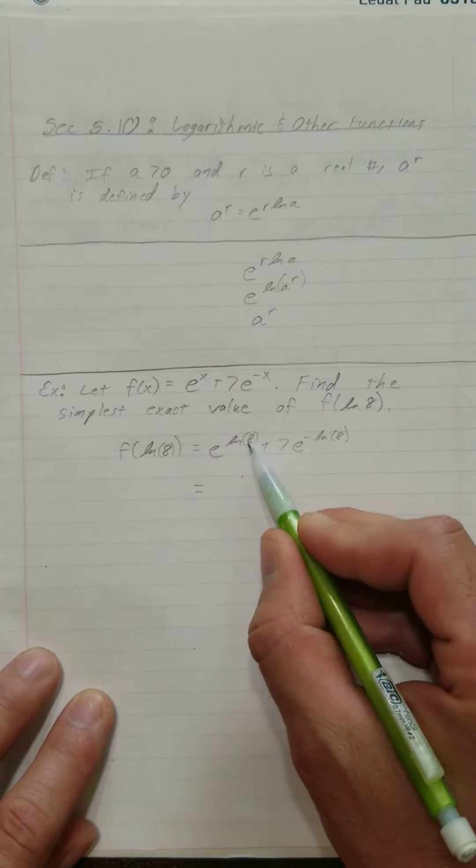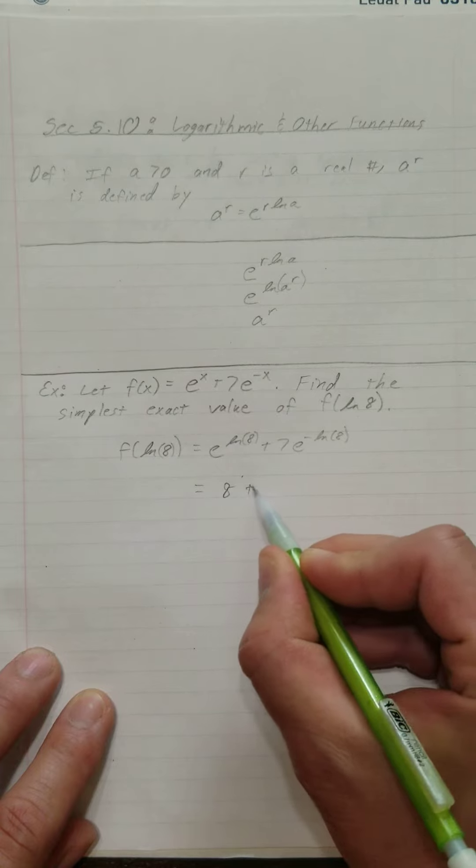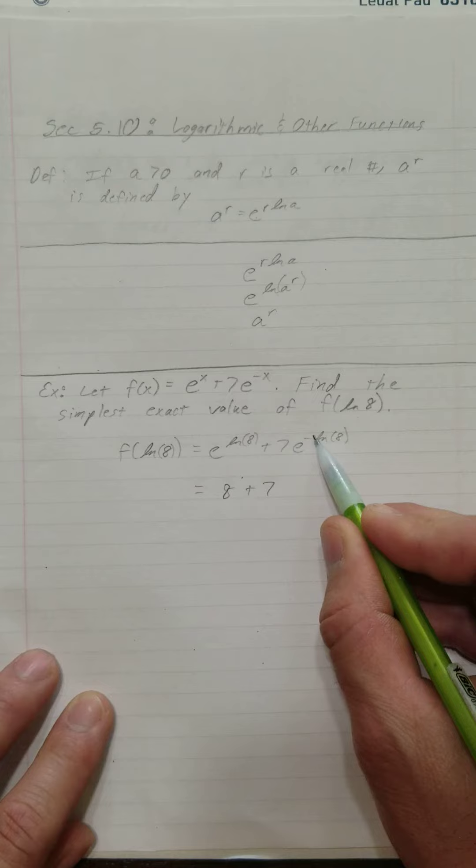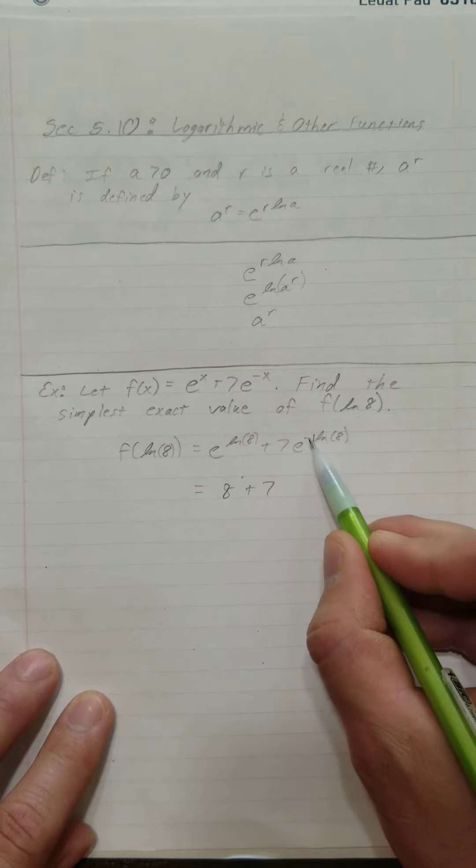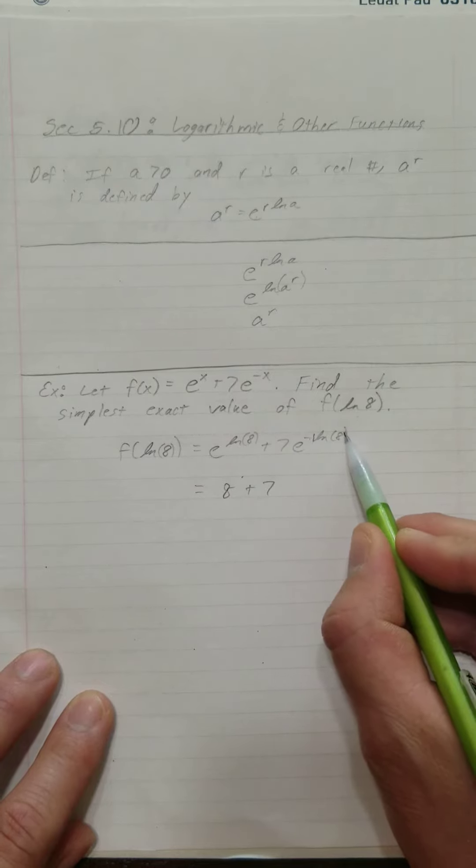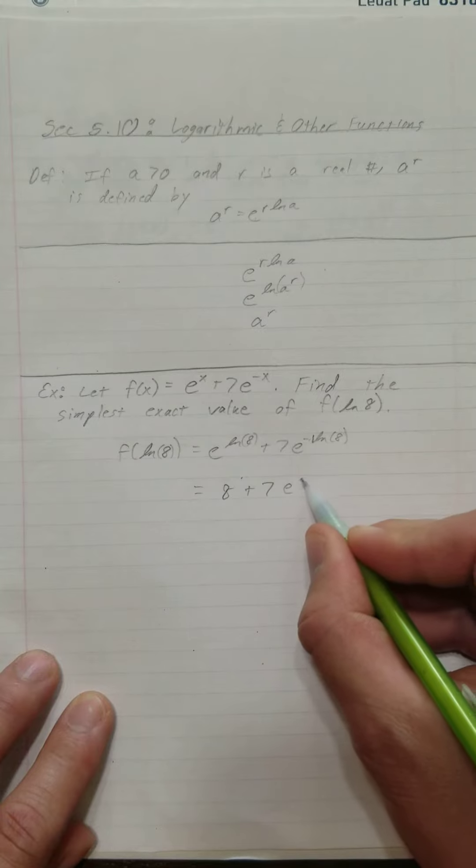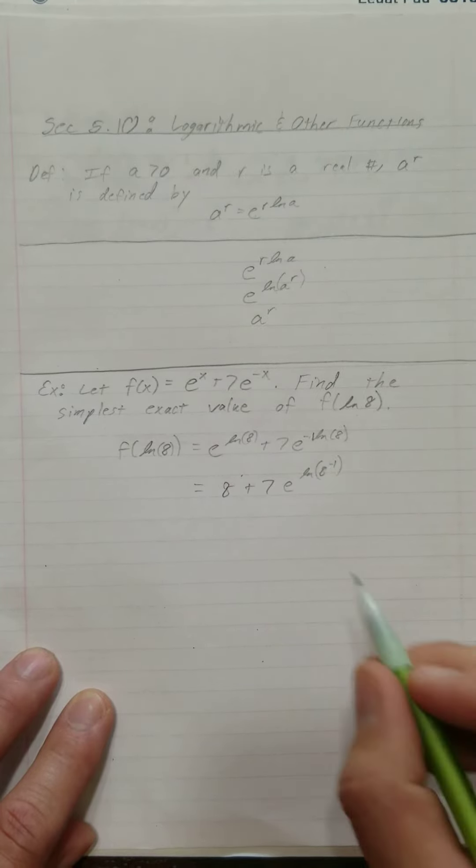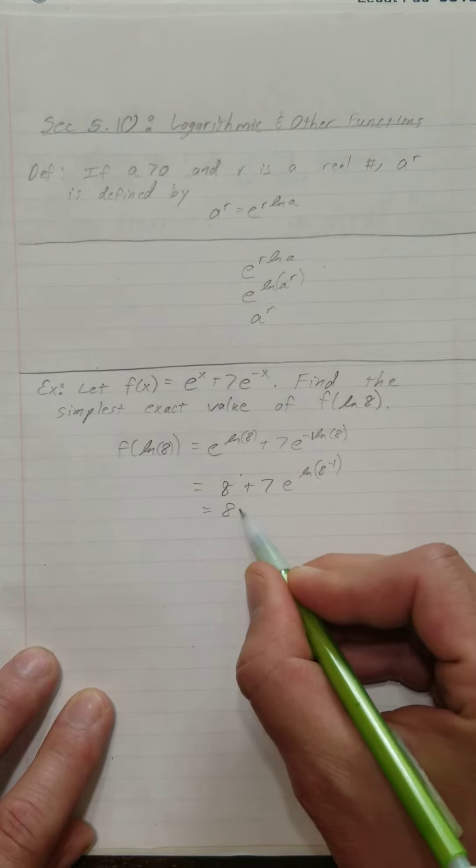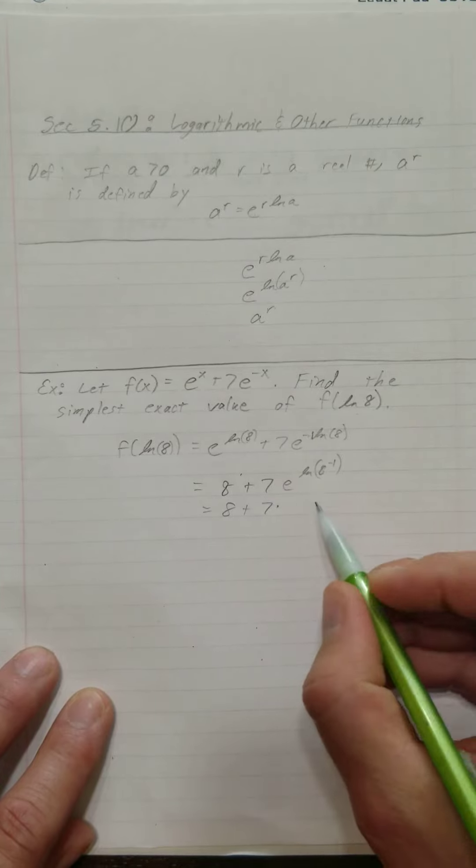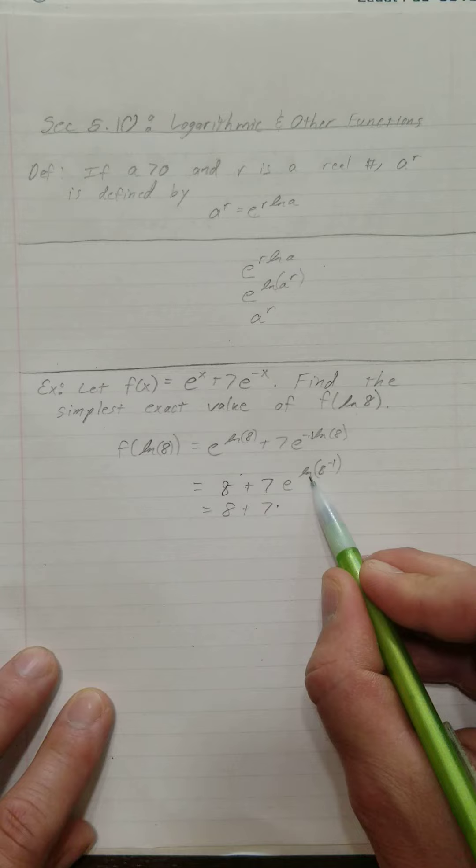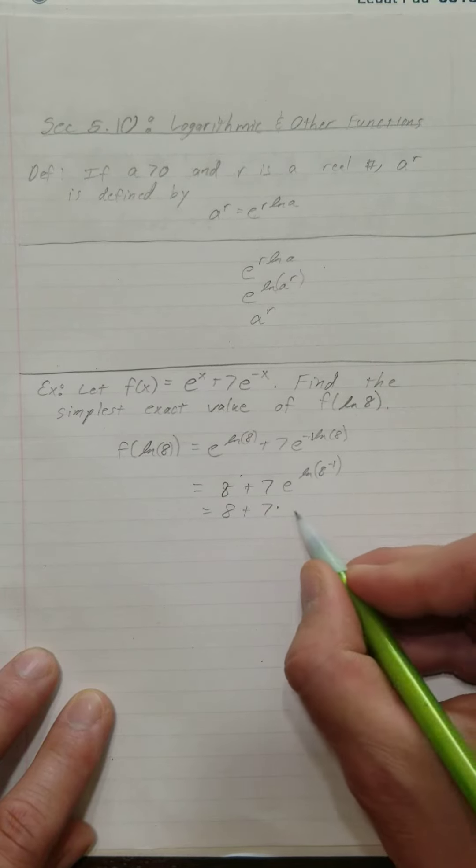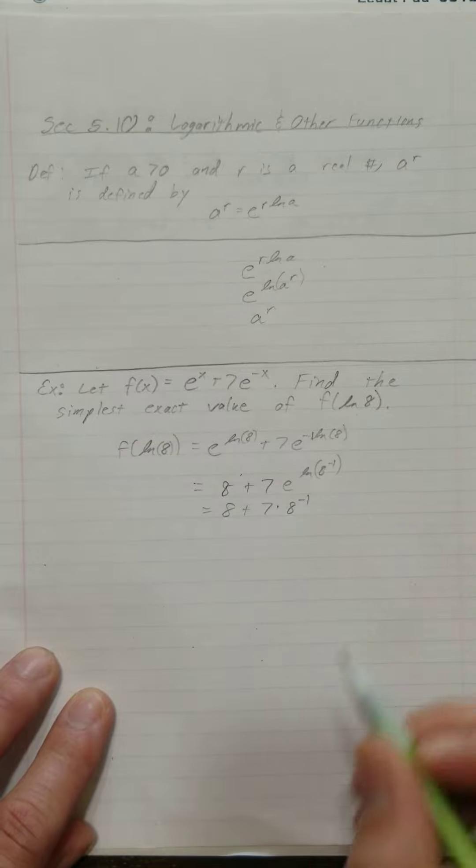Well, this part just turns into 8 plus 7. How about this part? What can I do with that negative? That's like a negative 1 right here, right? So, we can move it to the exponent of the argument. We have e to the natural log of 8 to the negative 1. Well, that's 8 plus 7 times... What's e raised to the natural log of some argument? It's that argument. 8 to the negative 1.